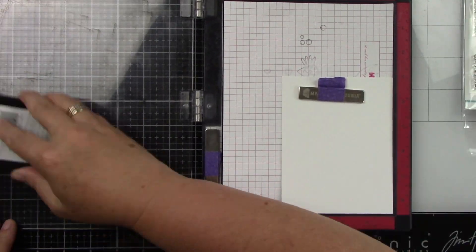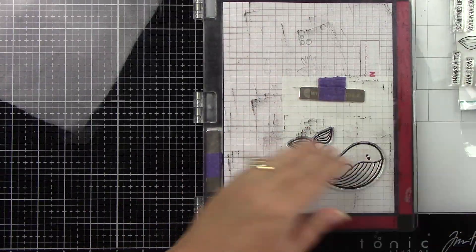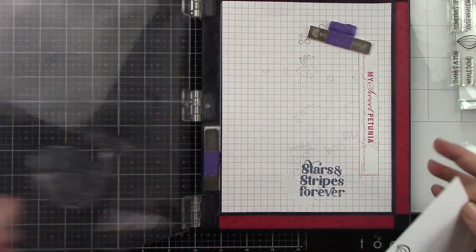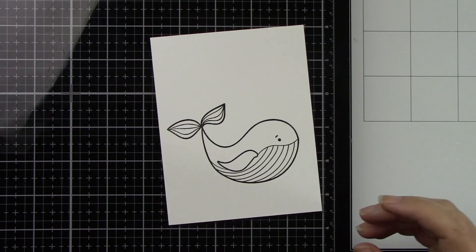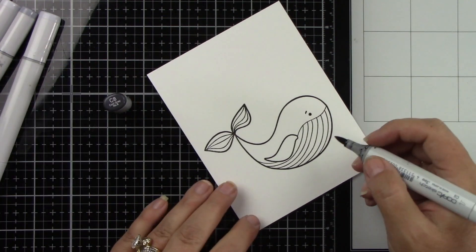I just did a blog hop so I do have a video about that and you can also go check out my blog for the blog hop. But I'm going to stamp this whale with some black Copic-friendly ink on my Neenah cardstock and of course we're going to be doing some Copic coloring.